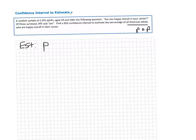This quantity is unknown. To find it, we'd have to survey every American adult in the country. Instead, what we do is estimate P using a 95% confidence interval.